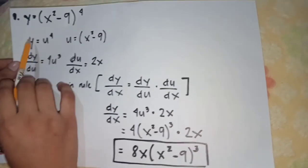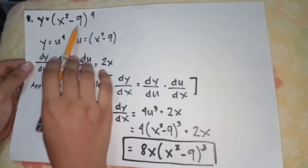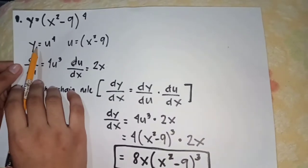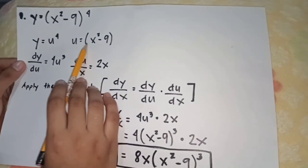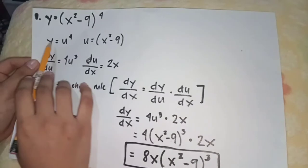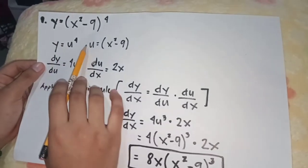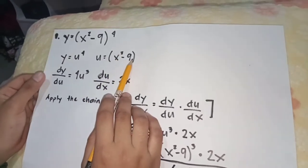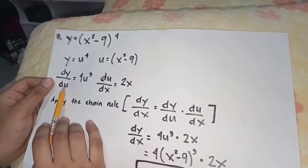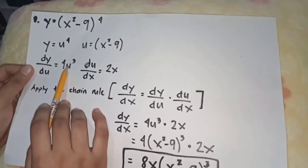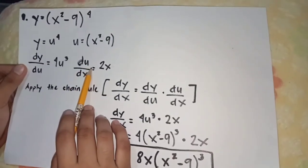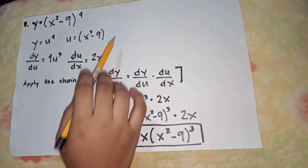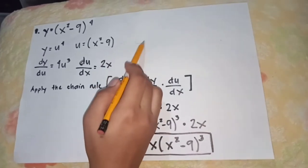Example number 1: Suppose that we want to differentiate y = (x² − 9)⁴. The first step is to identify the value of y and u. y is our outer function, so y = u⁴. u is our inner function, so u = x² − 9. The derivative of y with respect to u is 4u³. The derivative of u with respect to x is 2x. Remember that the derivative of a constant is 0.